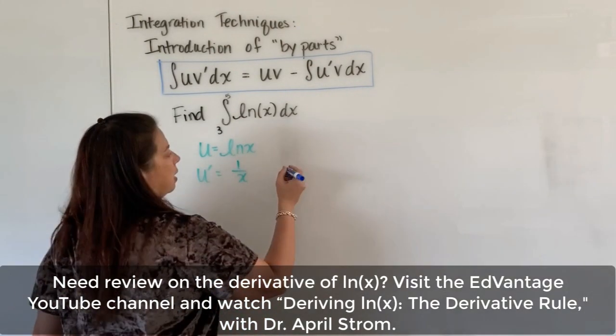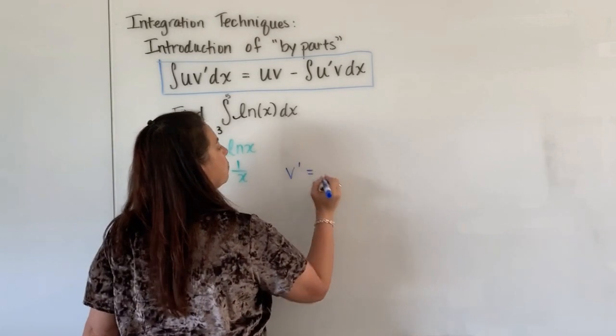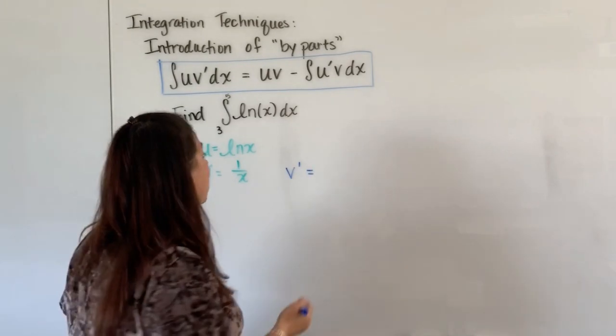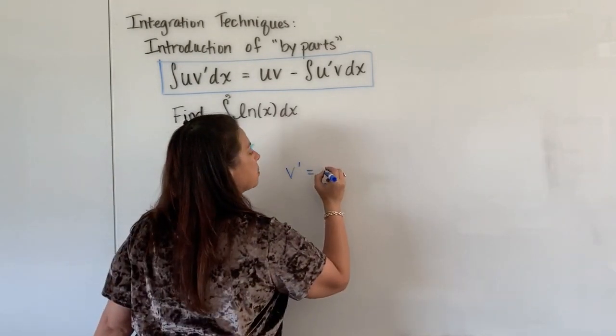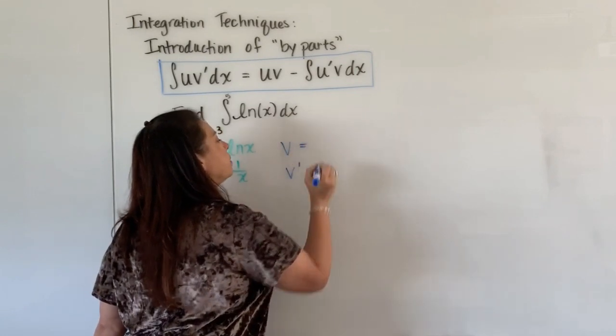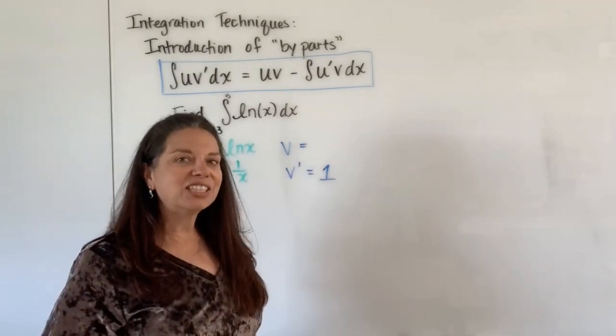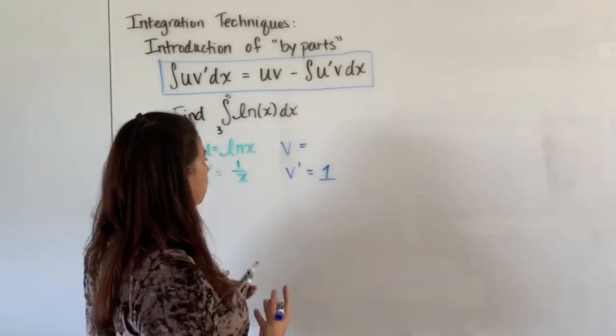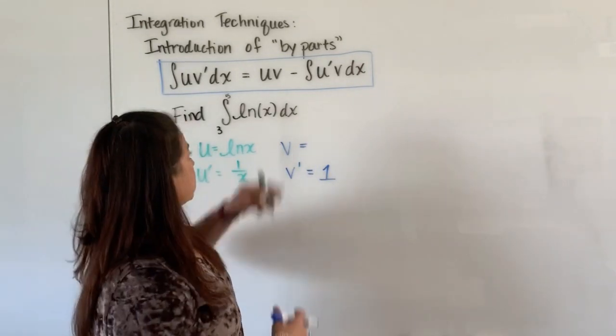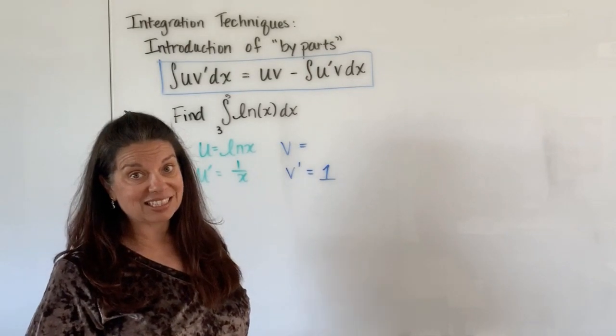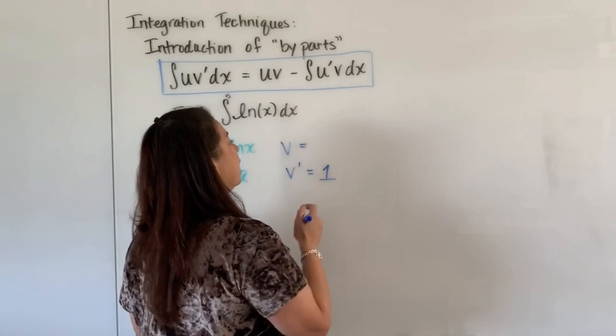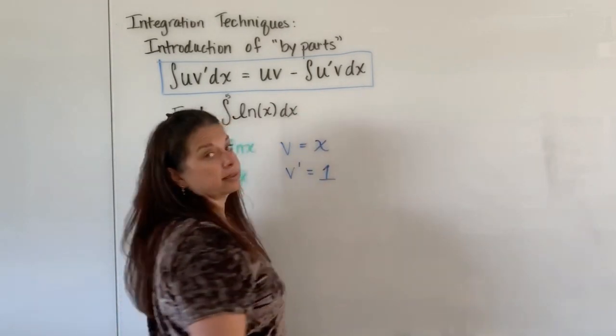Okay, let's then decide what v prime is. Well I mentioned a minute ago that the clever thing here is to imagine v prime is simply just one. Now if v prime is just one, what is the anti-derivative of v prime, which is just one? Well I'm using x by the way, so I need to be consistent with that variable. And so the anti-derivative of one with respect to x is just x.